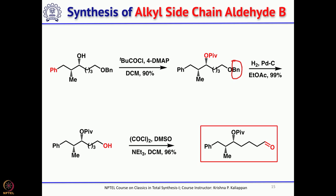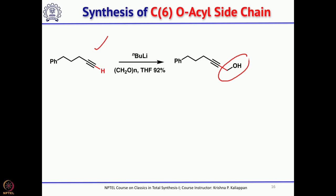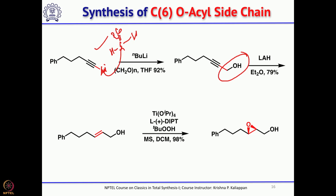Now we have seen the synthesis of fragments A and B. For the O-acyl side chain fragment C, we start with a terminal alkyne, easily prepared in three steps from TMS acetylene. Treatment with n-butyllithium followed by quenching with formaldehyde introduces the CH2OH group. LiH reduction of the propargylic alcohol gives the trans-allylic alcohol, which undergoes Sharpless asymmetric epoxidation with L-(+)-diisopropyl tartrate to give the epoxide.